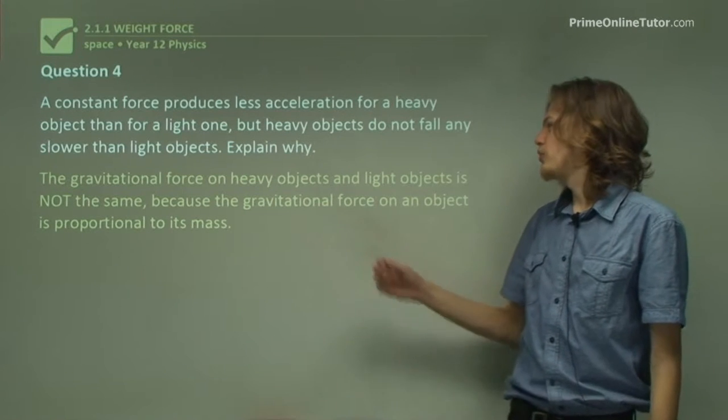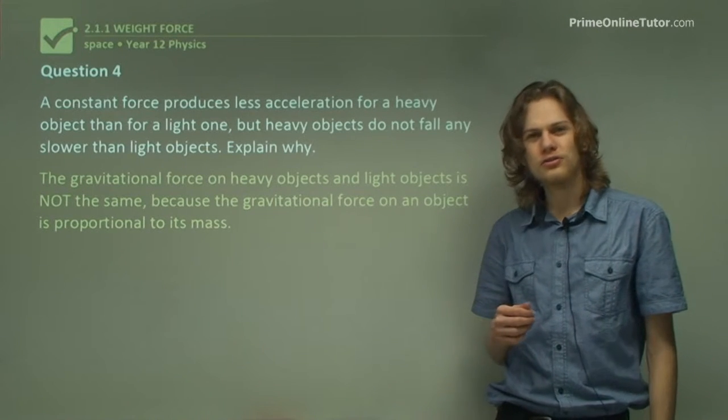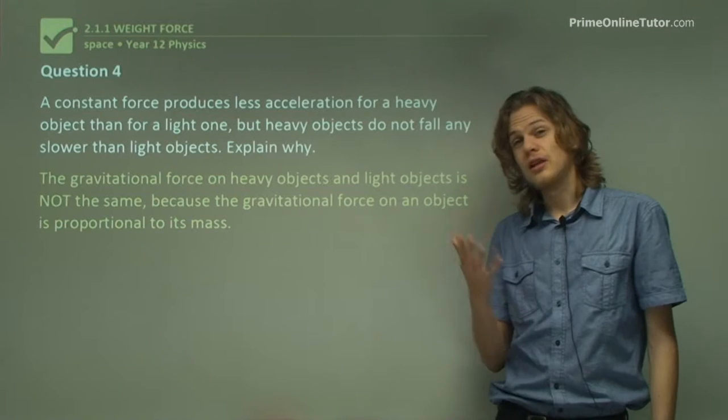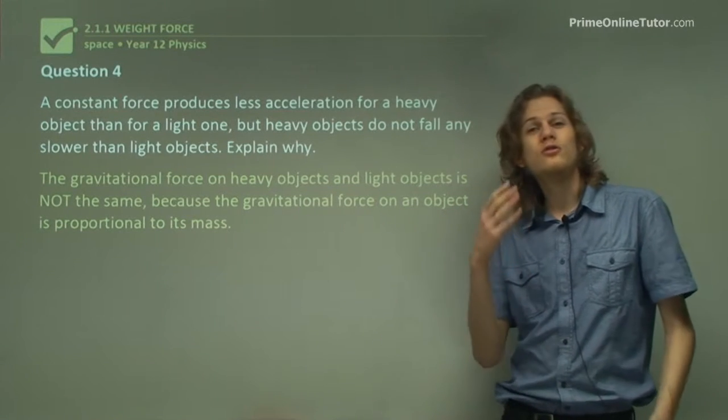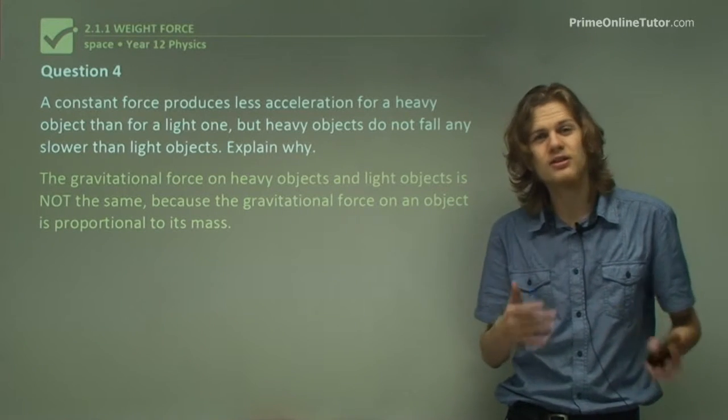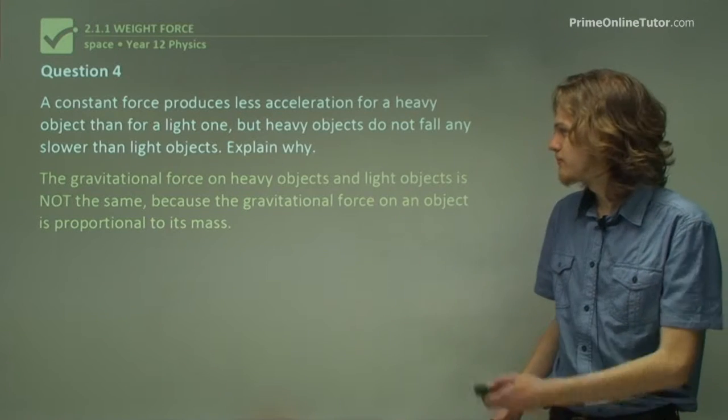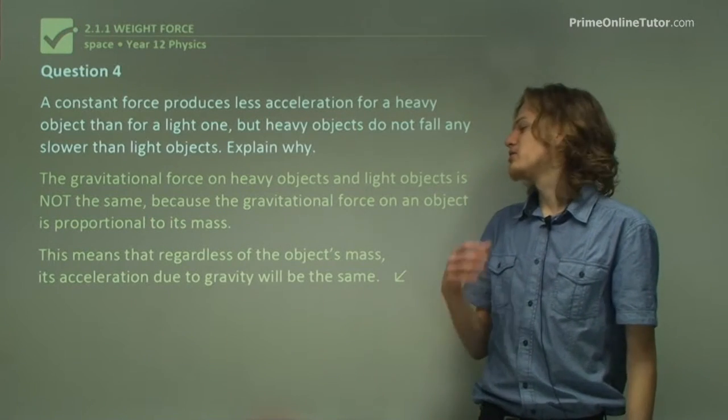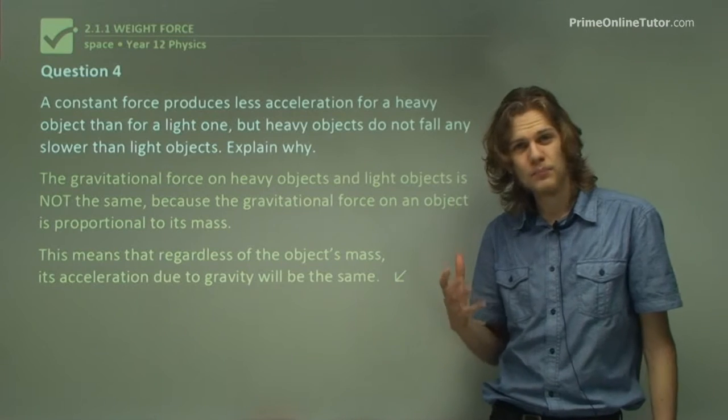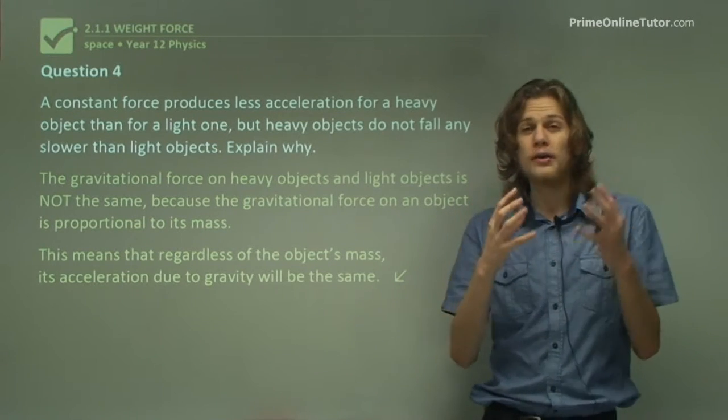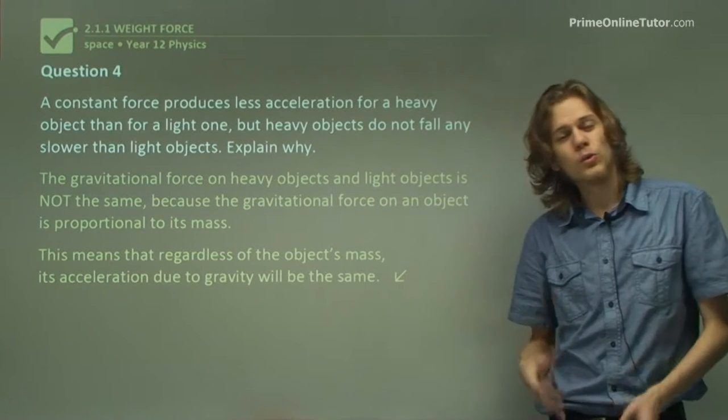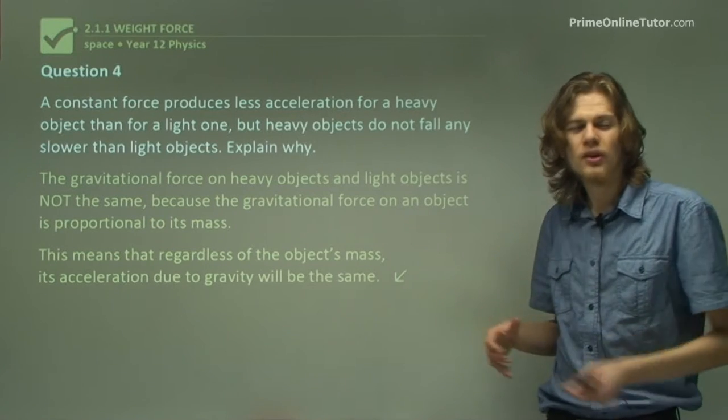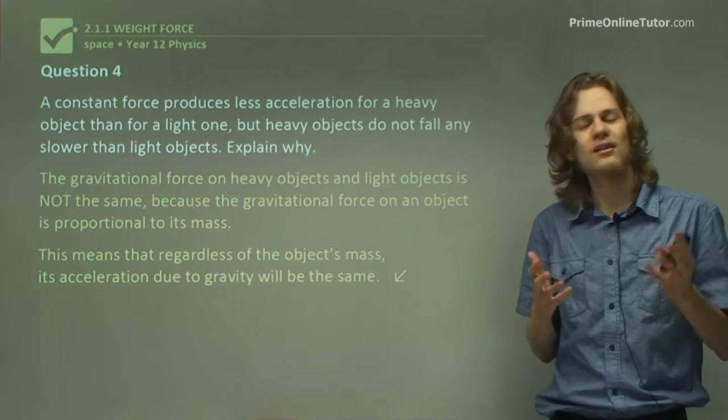The gravitational force on heavy objects and light objects is not the same. The acceleration is the same, because the forces that produce that acceleration are different. It means that regardless of the object's mass, its acceleration due to gravity will be the same. Heavy objects will experience a greater force. Light objects will experience a lesser force. So they'll accelerate at exactly the same rate.